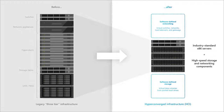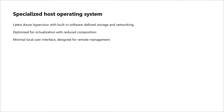In the last couple of years, hyper-converged infrastructure has absolutely become the normal way organizations deploy new physical server infrastructure — whether in a data center or at a branch office. With HCI, you consolidate that traditional three-tier architecture of separate hypervisors, storage, and network appliances down into industry-standard x86 servers with high-speed storage and networking. Software-defined storage creates virtual data volumes with resiliency features, and software-defined networking creates virtual switches, networks, load balancers, and gateways.